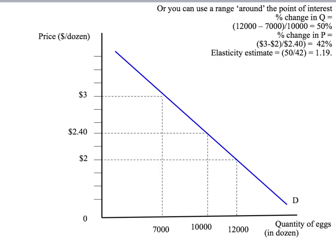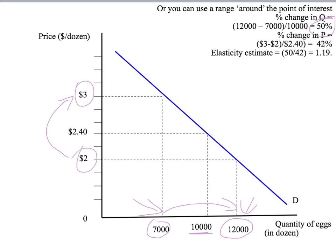Another way to estimate the elasticity at our point — price of $2.40, quantity of 10,000 — is to use a range around the point of interest. I'm going to look at the range on price from $2 to $3. At $3 the quantity demanded is 7,000; at $2 the quantity demanded is 12,000. So our percentage change in quantity is 12,000 minus 7,000, which is 5,000, divided by 10,000, which is 50%. Our change in price is $3 minus $2, which is $1, divided by $2.40, that's 42%. So using this method, 50 divided by 42 gives 1.19 as our estimate of the own price elasticity.